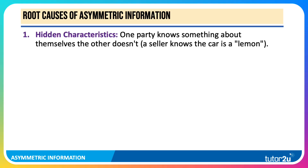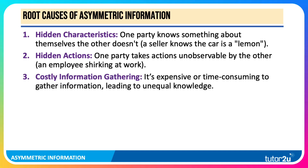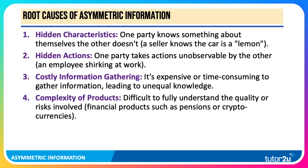There are lots of causes. First, hidden characteristics — one party knows something about themselves the other doesn't. For example, a seller might know the car they're trying to sell is a lemon rather than a peach. Second, hidden actions — one party takes actions unobservable by the other, such as an employee shirking at work, which we link to the principal-agent problem. Third, costly information gathering — it can be expensive or time-consuming to gather information, leading to unequal knowledge. And fourth, complexity of products — it can be hard to fully understand the quality, uncertainties, and risks involved, for example with complex financial products such as pensions or cryptocurrencies.